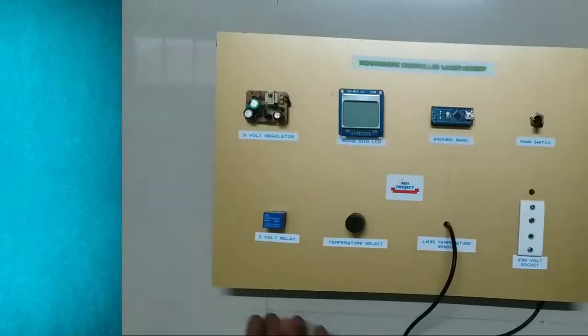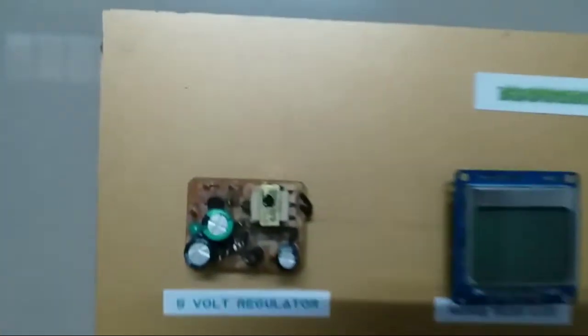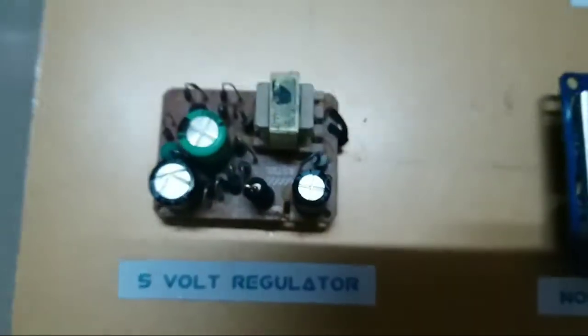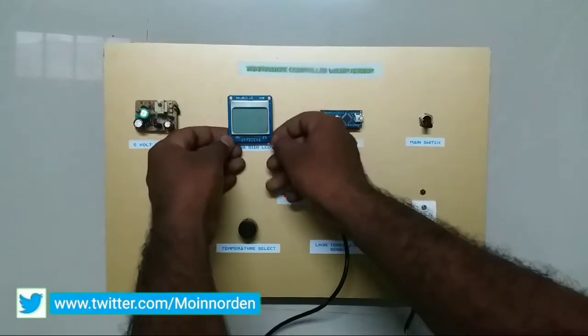The first one is Voltage Regulator. It is used to step down and convert the AC 230V to 5V DC, because Arduino Nano cannot work beyond 5V DC.